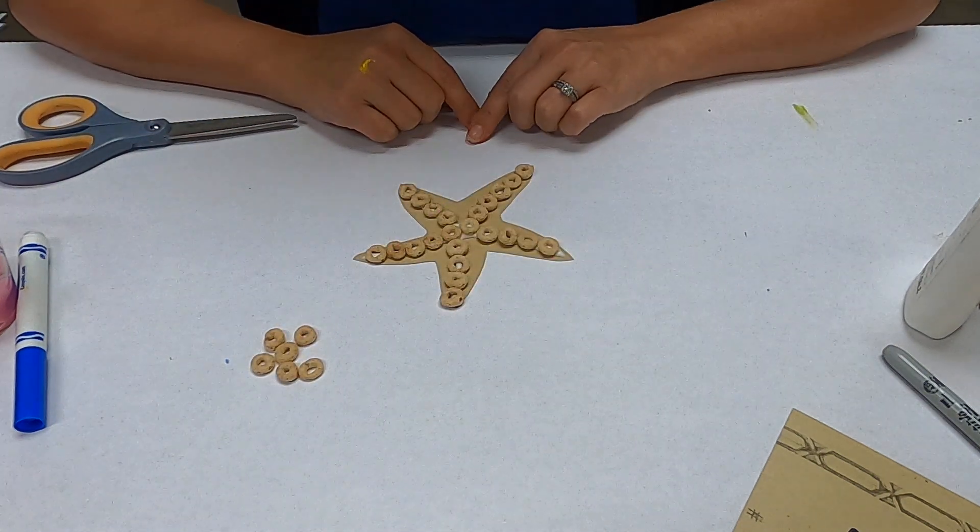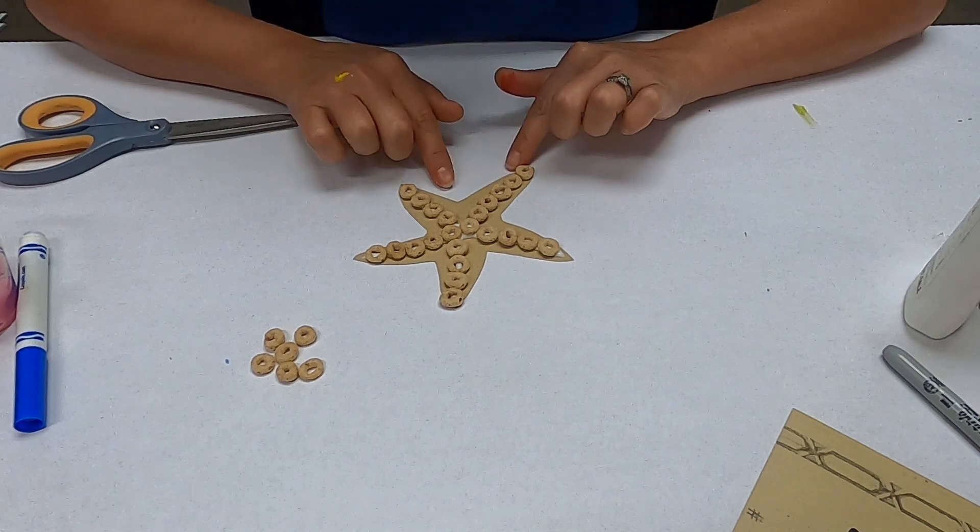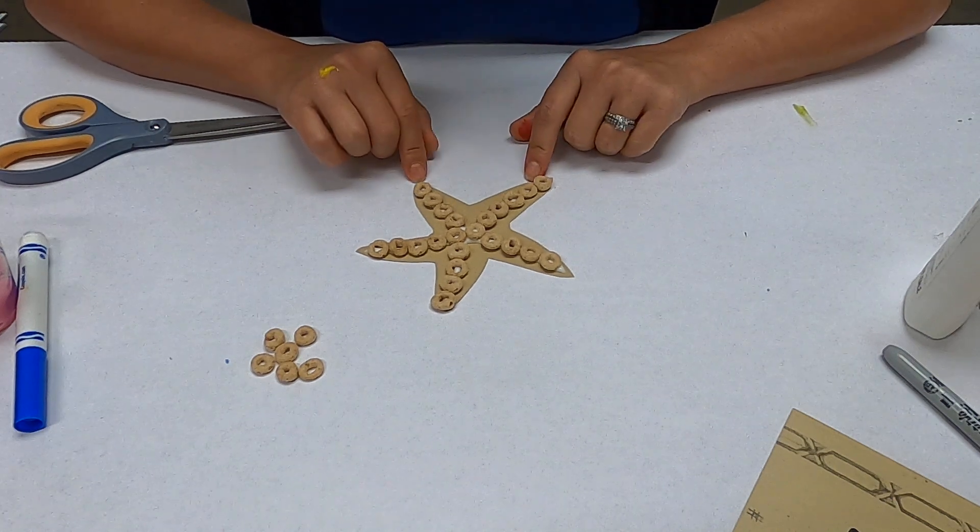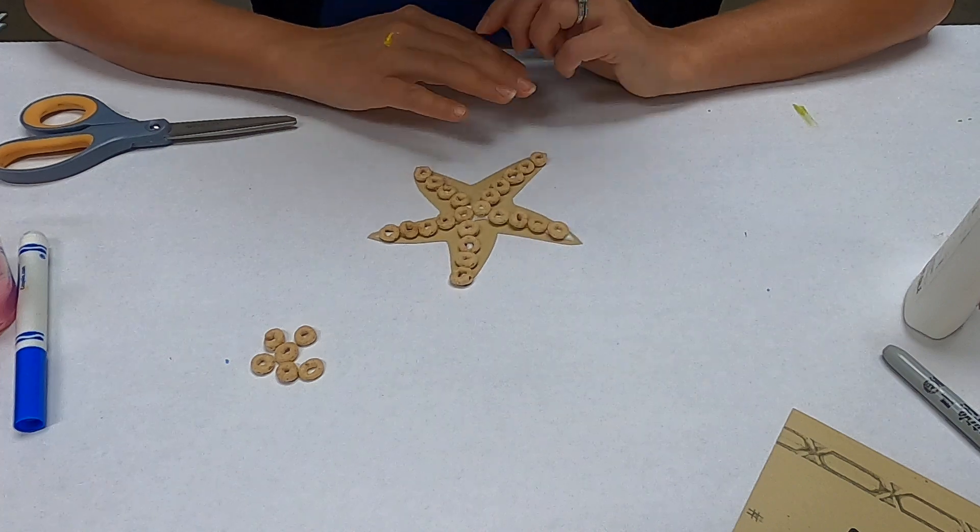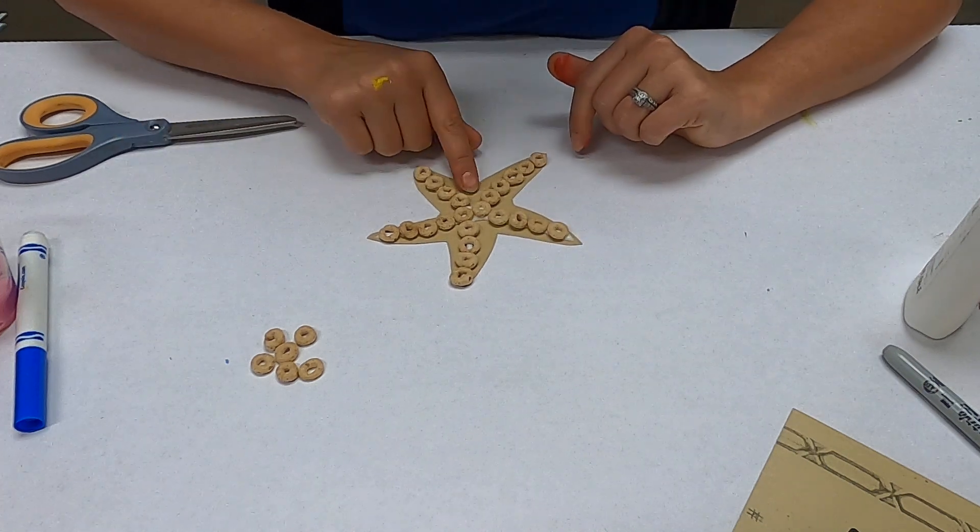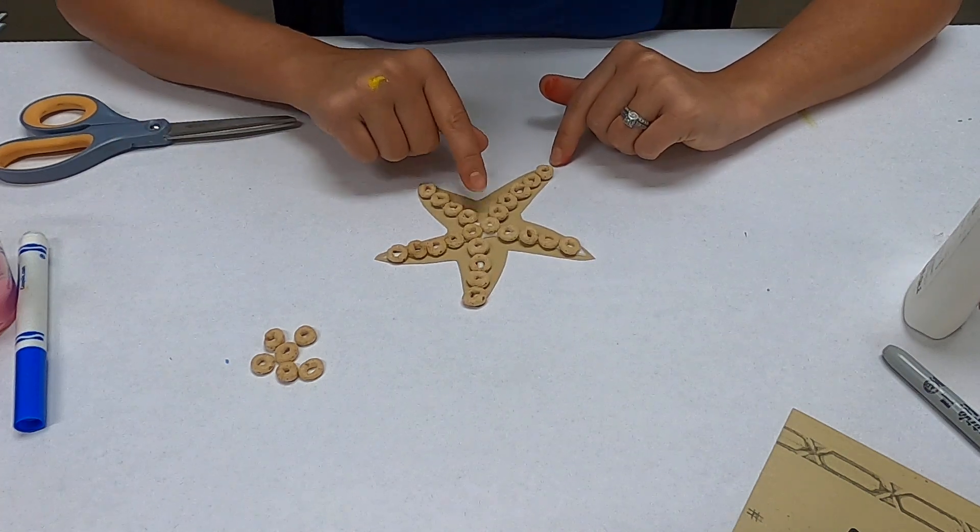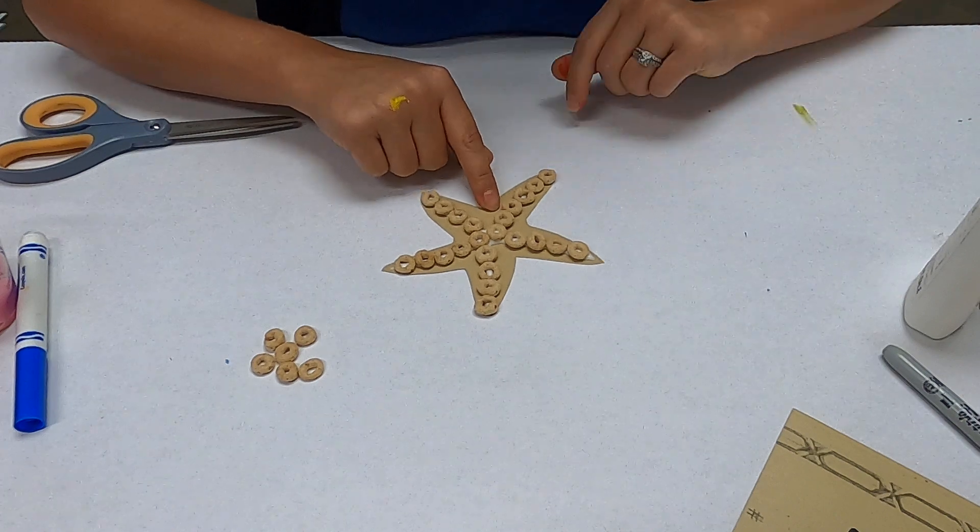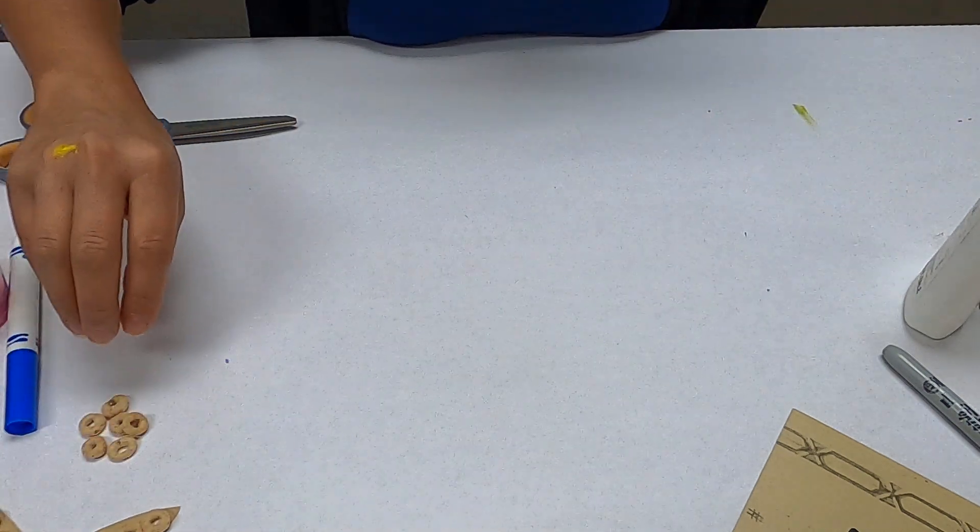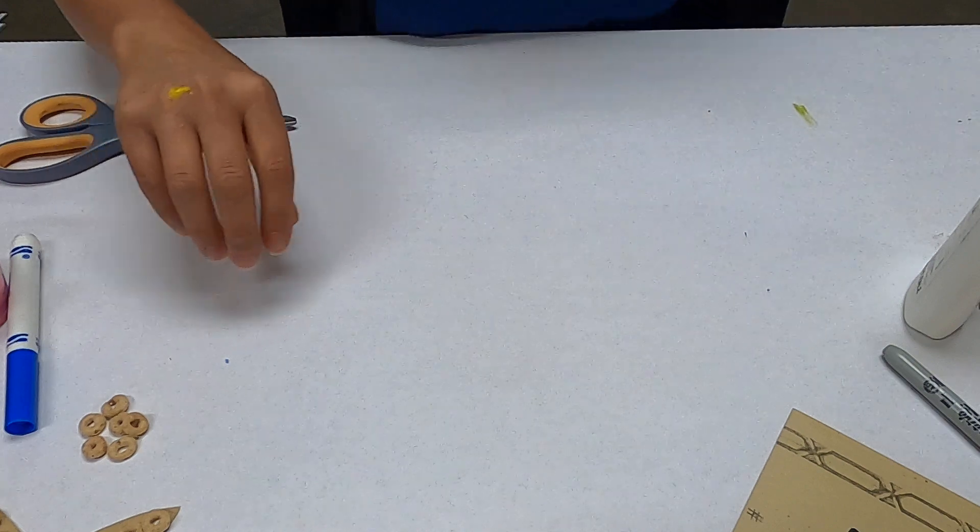Once you get all the way around there, you can let it dry completely before you play with it. You can repeat this over and over again and make a bunch of these if you want. So that's our little kind of rough starfish, and then our last starfish is going to be a colorful painted one.